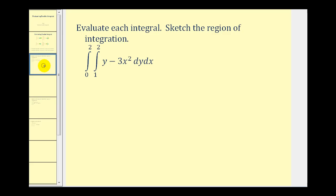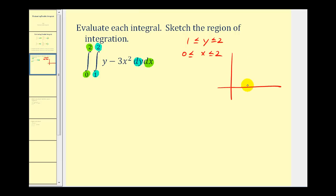Let's try some of these. Here we want to evaluate the integral, and we also want to sketch the region of integration. Since we're first integrating with respect to y, y will be on the closed interval from 1 to 2, and x will be on the interval from 0 to 2. So x is between 0 and 2, and y is between 1 and 2, giving us a rectangular region. This is our region of integration, with x on the closed interval from 0 to 2 and y on the closed interval from 1 to 2.